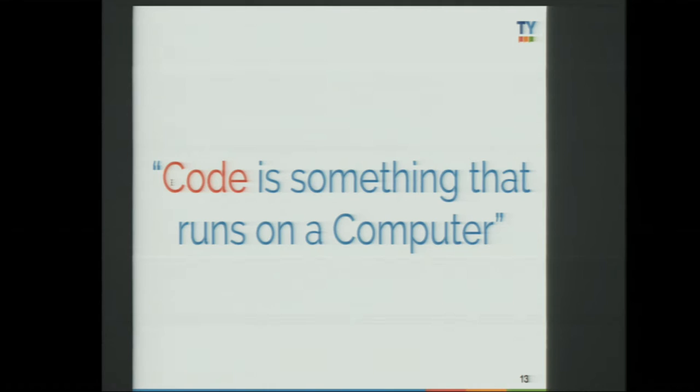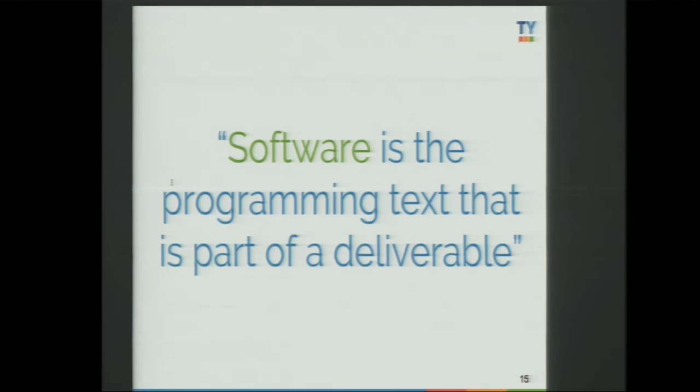First, we have to make a distinction between code and software — I take this from a talk by Daniel Moisset at PyData Berlin. Code is something that runs on a computer. When you write a script or a Python notebook, you're writing code. Code might not have tests or follow any convention or documentation — you just write it and it does the job. Software, on the other hand, includes the programming text inside a deliverable, plus deployment scripts, testing, documentation, and even technical support. You want to create software that is maintainable, testable, and deployable.